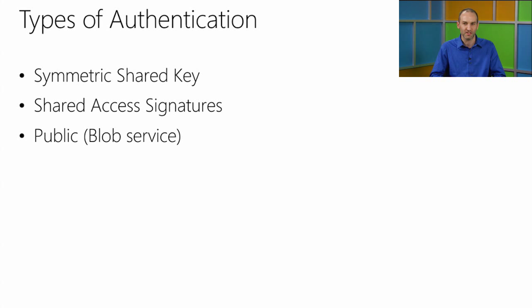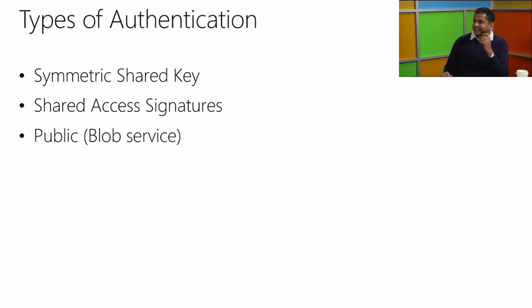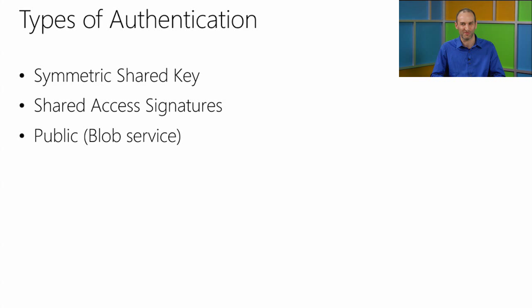We have three types of authentication: symmetric shared key, shared access signatures — sometimes called pre-signed URLs or authenticated URLs — and public access for blobs, which is useful for certain scenarios.